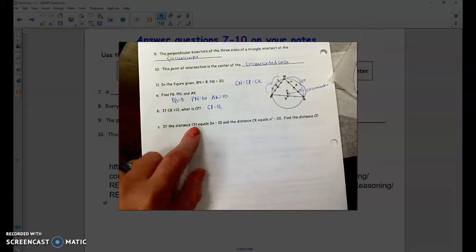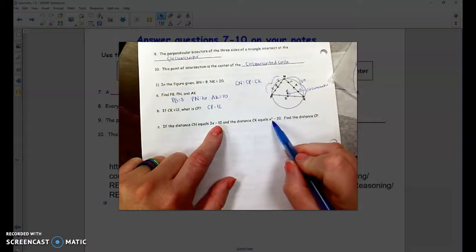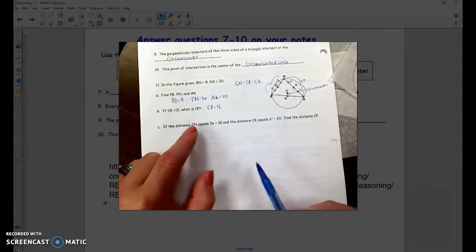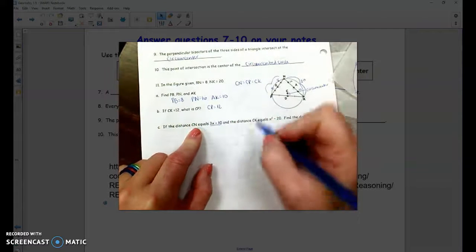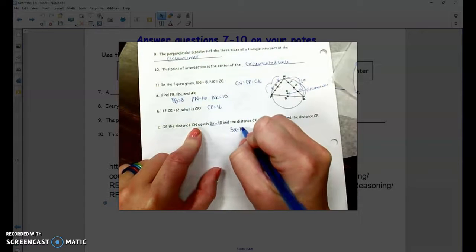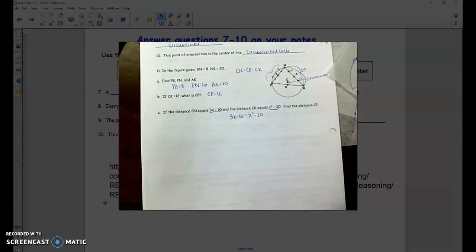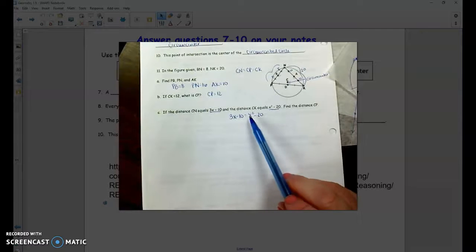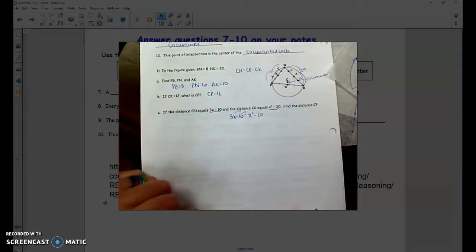Part C says if the distance of C to N is 3X minus 10, and the distance C to K is X squared minus 20, what's the distance from C to P? Well, CN, CK, and CP are all equal. So when I'm given expressions for CN and CK, I could simply set those equal to each other. So we've had an example similar to this on 1.3, where we have a quadratic. And so remember, we want to get all terms on one side, set equal to 0, and we want to keep X squared positive.